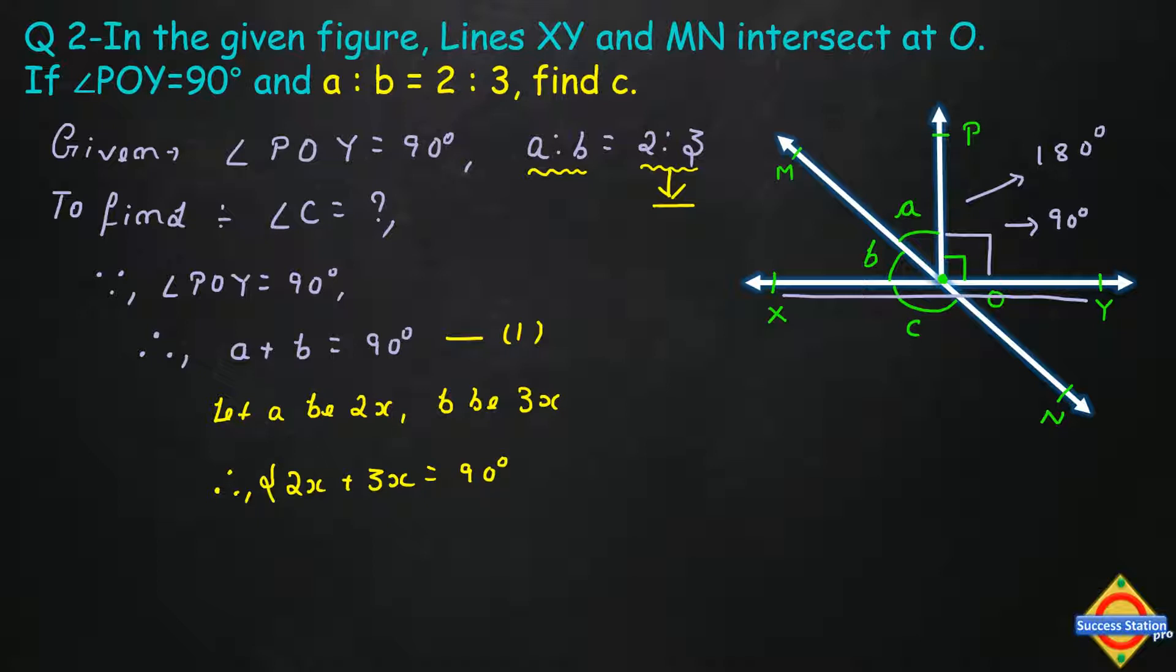You should understand now why I considered a variable - it makes this a simple equation to solve. When you solve this equation, you can find the value of X, and then find the values of A and B. But we need to find angle C, and for that we will need to use angle B. Now, 2X plus 3X equals 5X equals 90 degrees. So X equals 90 divided by 5. When you cancel, the value will be 18 degrees. X equals 18 degrees.